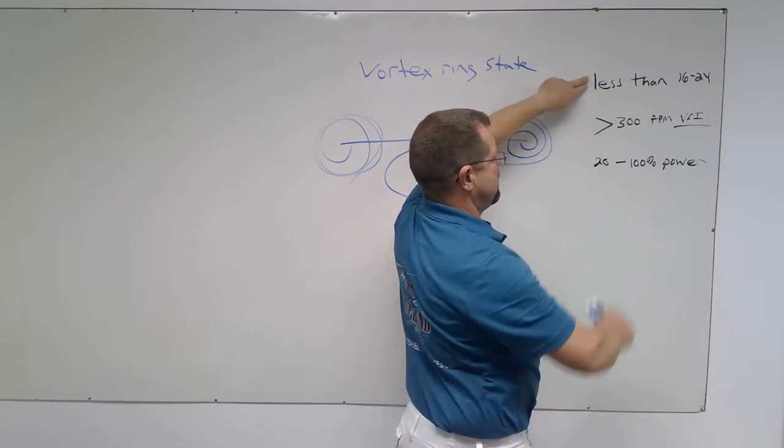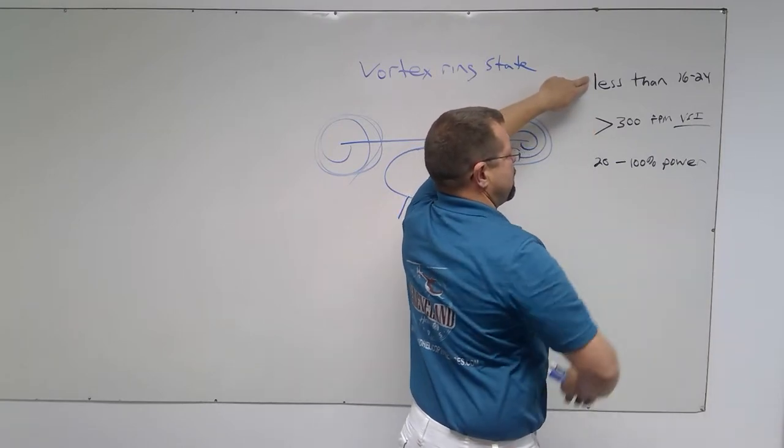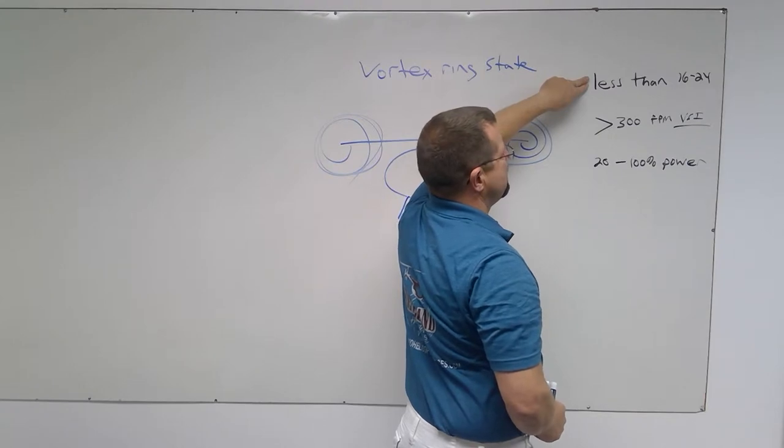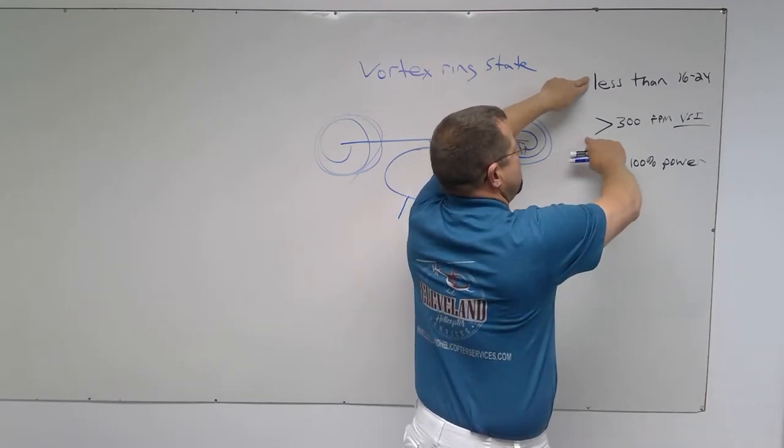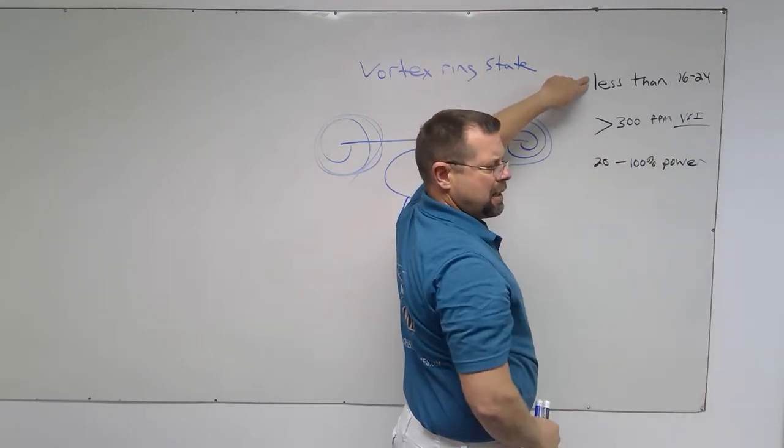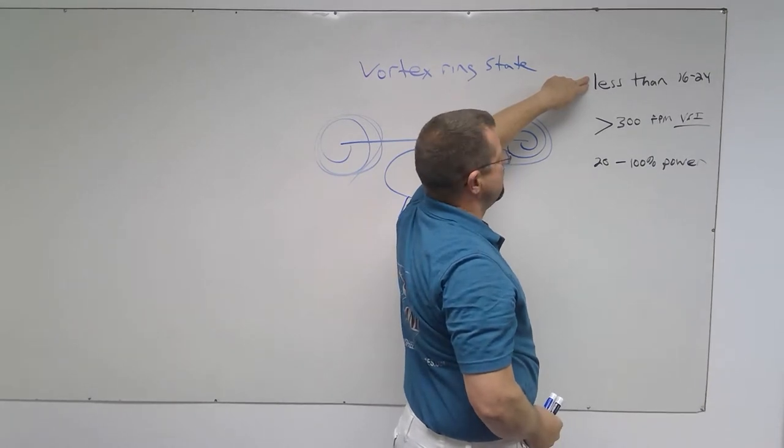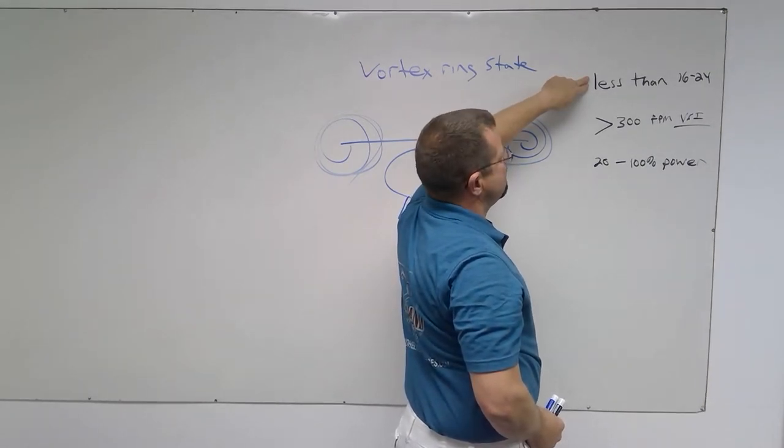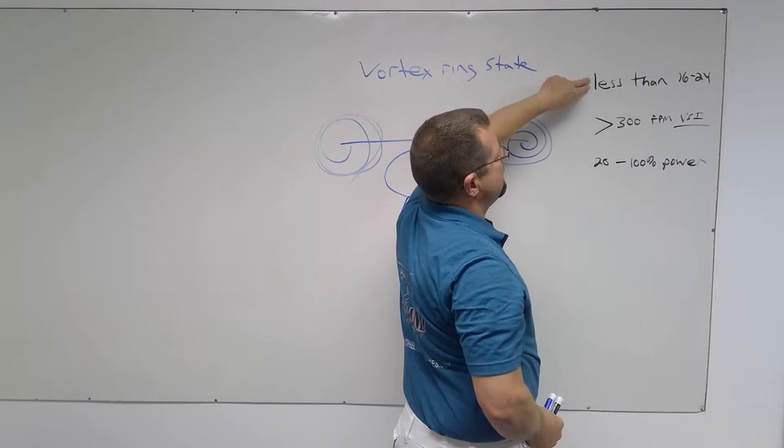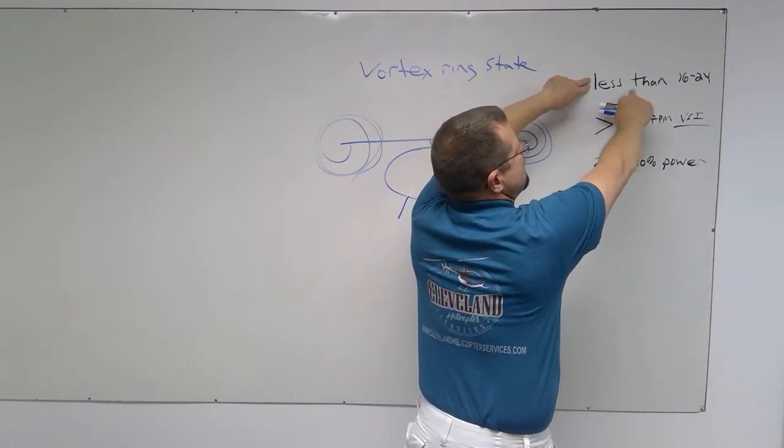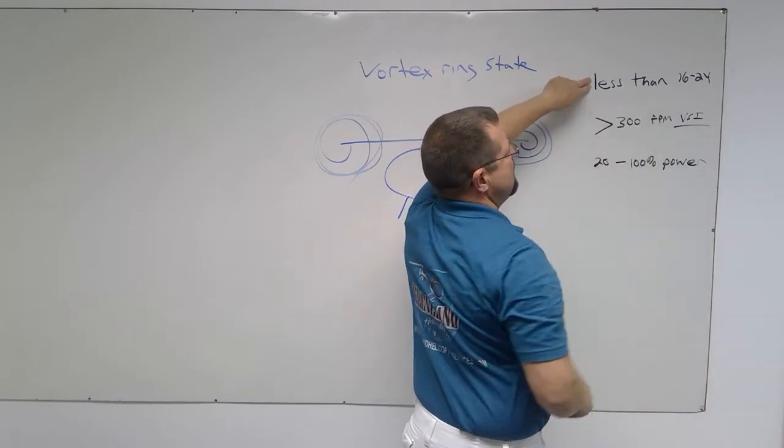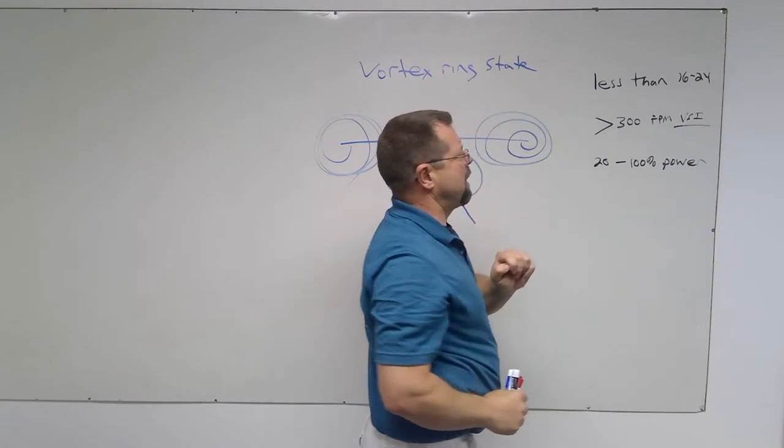Let's take away this one. I'm using 20 to 100 percent of the power. Let's say I got a crazy descent rate. I'm coming in at 1,500 feet per minute, but I'm keeping plenty of speed in it. I'm not going less than ETL. So I cannot get into settling with power.